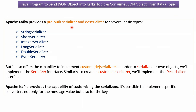Apache Kafka provides pre-built serializers and deserializers for several basic types. For example: string serializer, short serializer, integer serializer, long serializer, double serializer, and byte serializer.